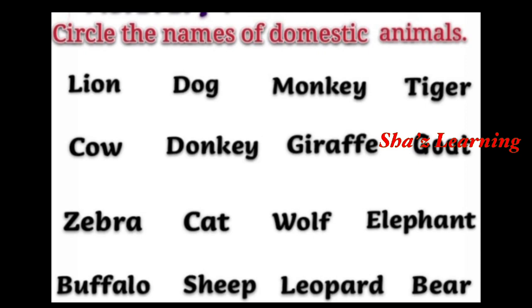We know that domestic animals are pet animals. We keep them in the house. Domestic animals live in the house — cow, goat. These are animals we keep at home.